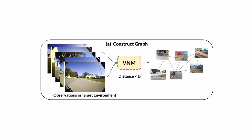The visual navigation model consists of a goal-conditioned distance function and policy. Given a set of observations in the target environment, the VNM distance function is used to infer connectivity between them and construct a topological graph of the environment.